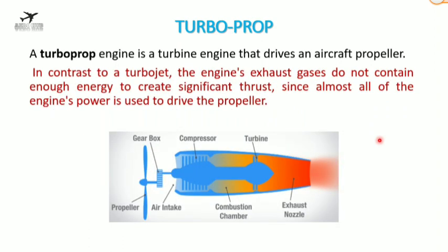Next we have the turboprop engine. A turboprop engine is a turbine engine that drives an aircraft propeller. It is essentially a turbojet engine with a propeller. In contrast to a turbojet, the exhaust gases do not contain enough energy to create significant thrust, since almost all of the engine's power is used to drive the propeller.